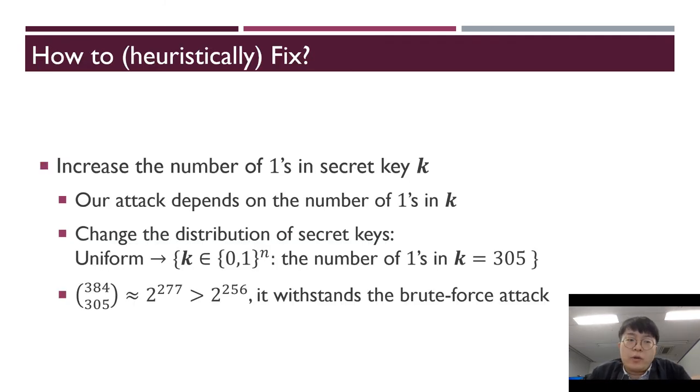Then how to fix to prevent our attack? In the alternative weak PRF case, just increase the number of 1s in secret key k. Our attack only depends on the number of 1s in k. So change the distribution of secret key k from uniform distribution to vectors whose number of 1s is 300.05. And n choose 300.05 is large enough to prevent brute force attack. So our fix does not have to change n.